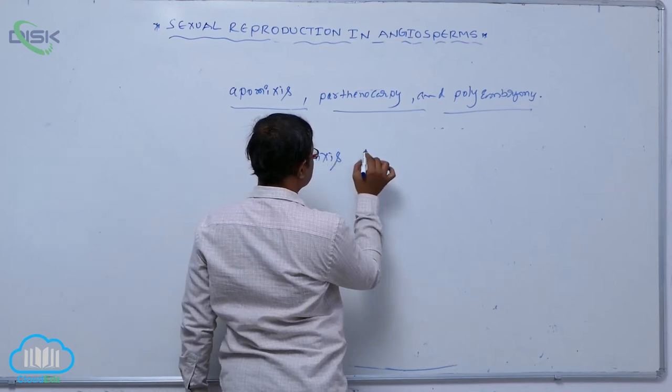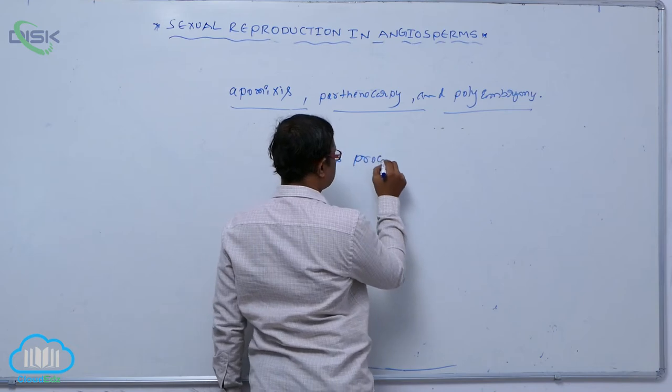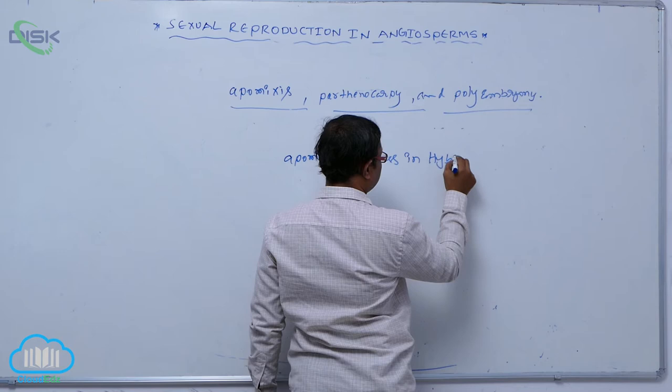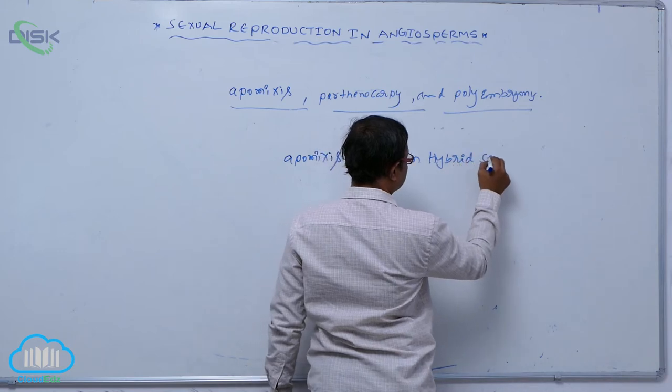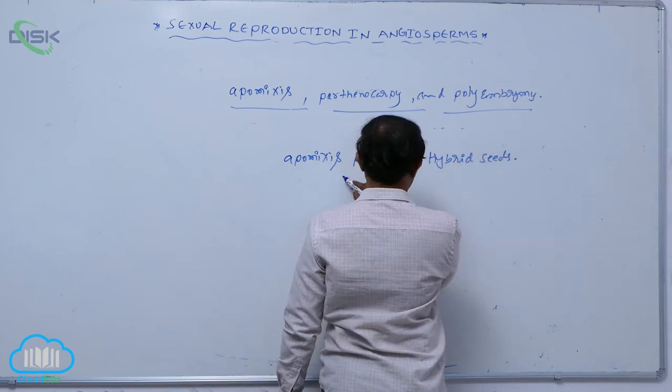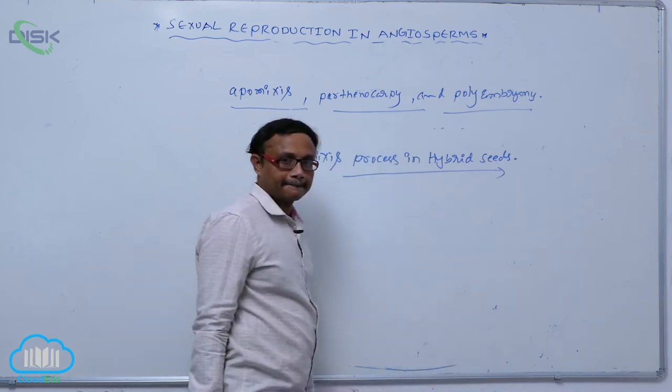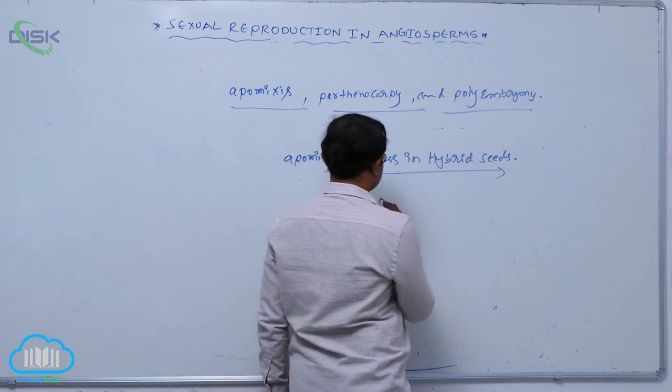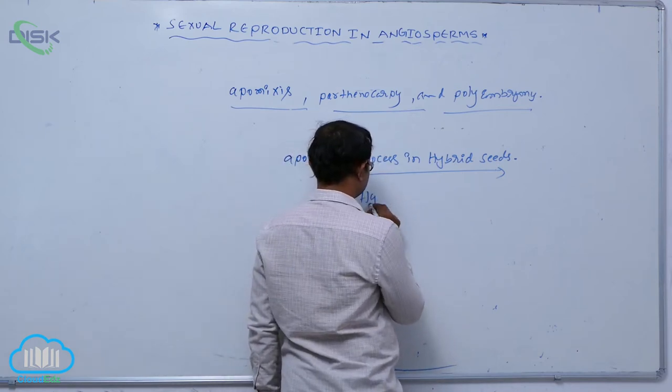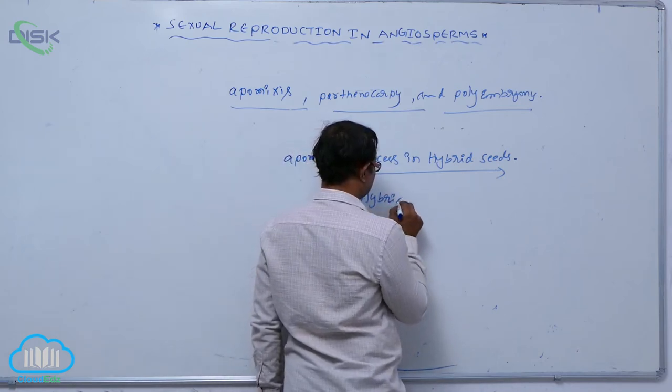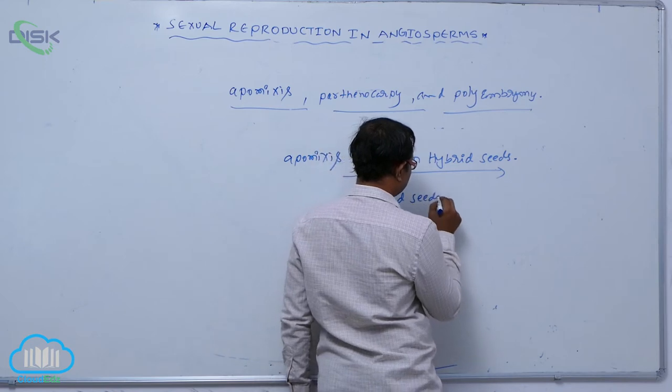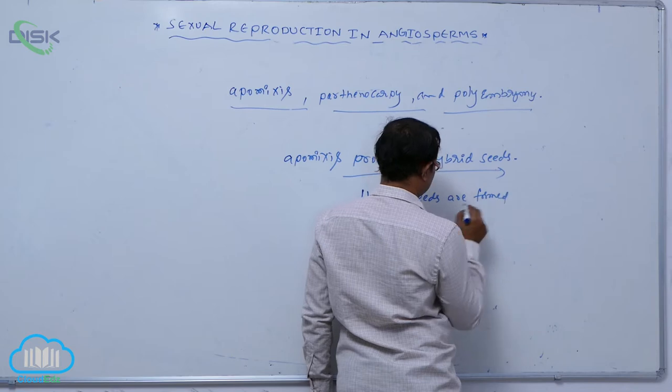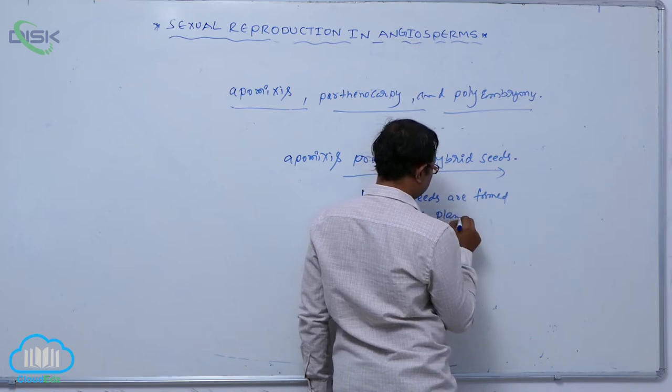Apomixis is a process in hybrid seeds. Generally hybrid seeds are necessary. Hybrid seeds are formed by plant breeding method.